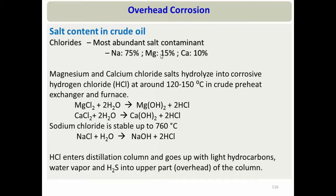Magnesium chloride and calcium chloride in crude oil, when the crude goes into the preheat exchanger or furnace in the crude distillation unit and temperature increases to around 120–150°C, these salts hydrolyze and produce hydrogen chloride (HCl). Magnesium chloride is the least stable and hydrolyzes at lower temperature; calcium chloride is slightly more stable and hydrolyzes at higher temperature.